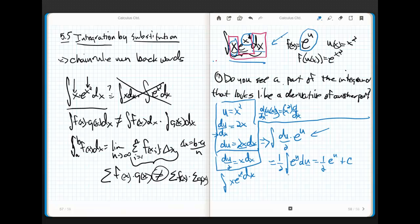But there's only one problem. Remember, this whole function started out as a function of x. So, what I have to do is I have to back substitute my u, and I end up with 1 half e to the x squared plus c.